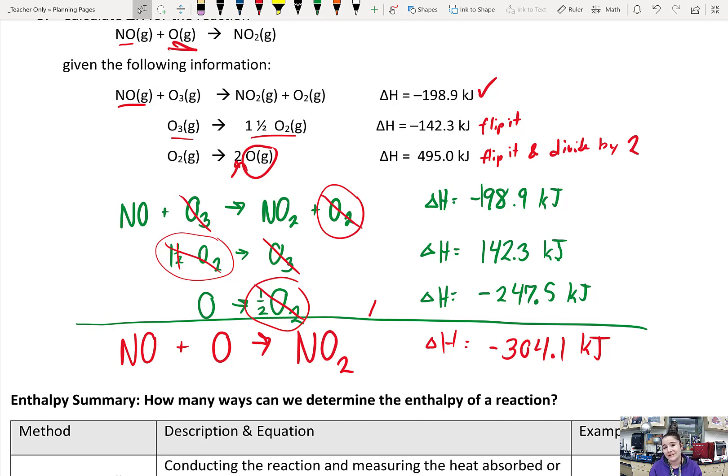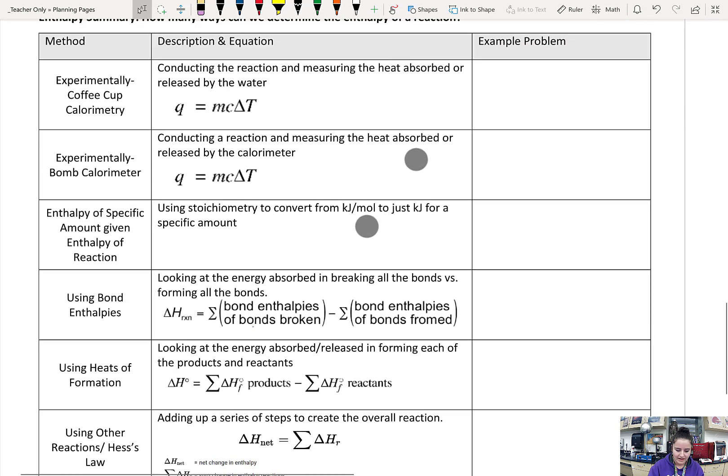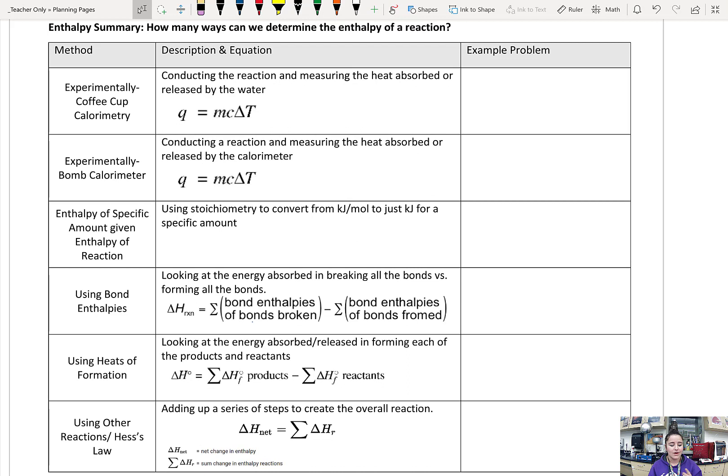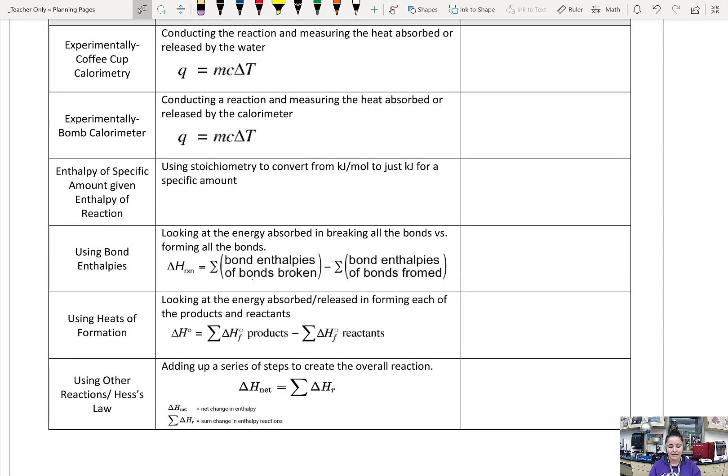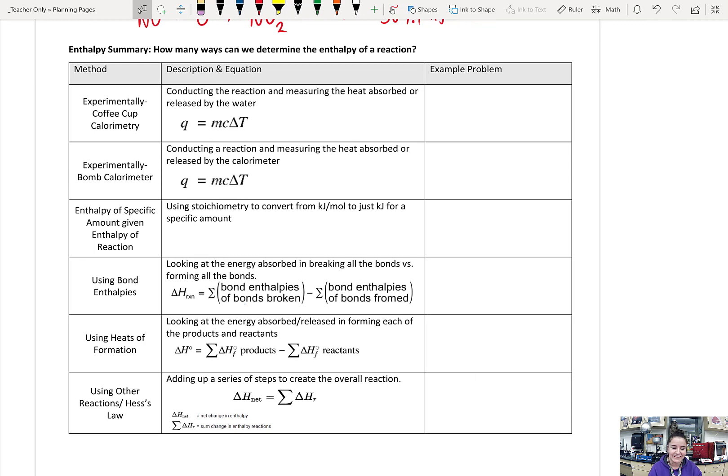So that's all of the methods that we use to find the enthalpy change for a reaction. I have them summed up in this nice little table for you. We have the two calorimetry methods - coffee cup calorimetry where we measure the heat absorbed or released by the water and the one where we just use the calorimeter itself. We can use stoichiometry to convert from kilojoules to moles to just kilojoules for a specific amount. No real equation to go with that one, just using that stoichiometry. We can use the bond enthalpies by looking at the bonds broken minus the bonds formed. We can use the heats of formation for the products minus the reactants, and we can use Hess's law. Now I highly recommend you to go back in your notes and put a screenshot or a little mock-up of an example problem for each of these methods, just so you guys can see those connections. But that's it for today's lecture and unit six on thermodynamics.